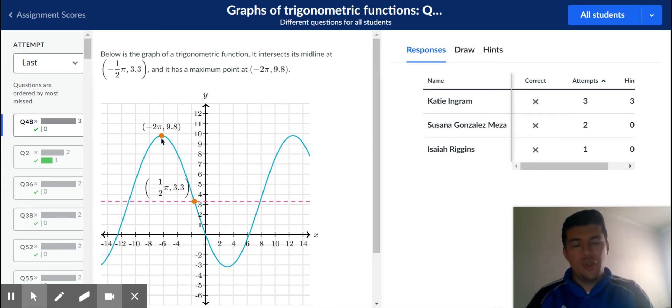From pi over 2 to 2 pi, there's a difference of 3 pi over 2. So if this horizontal distance is 3 pi over 2, then the period will be 4 times that amount. So 4 times 3 pi over 2 is 12 pi over 2, and 12 pi over 2 is equal to 6 pi.